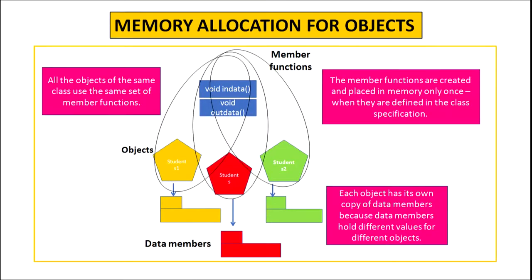Memory allocation for objects: it is important to note that all objects have their own copy of data members and they share the same copy of member functions. This is because each object holds different values for its data members. Member functions are created and placed in memory only once when they are defined in the class specification, and all objects share the same copy because at a time only one object can invoke a particular member function — two objects cannot invoke the same member function simultaneously.